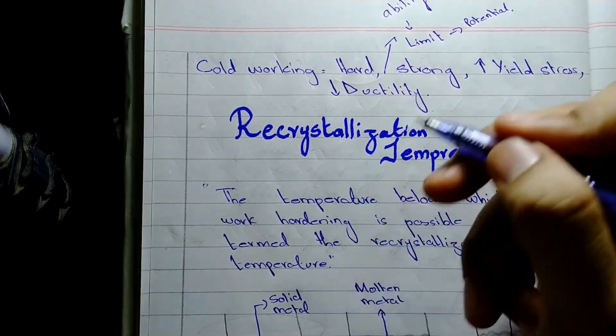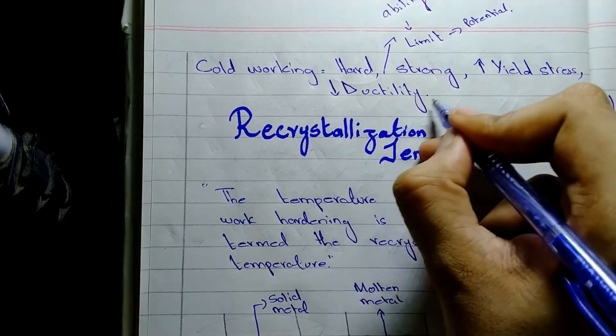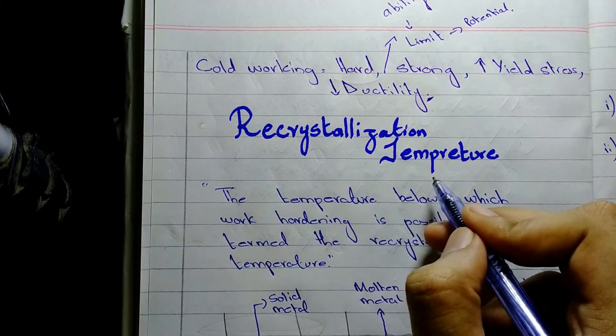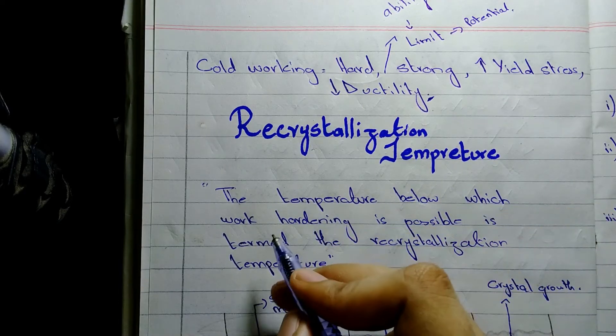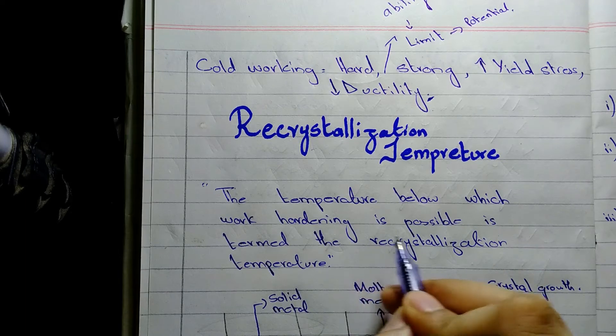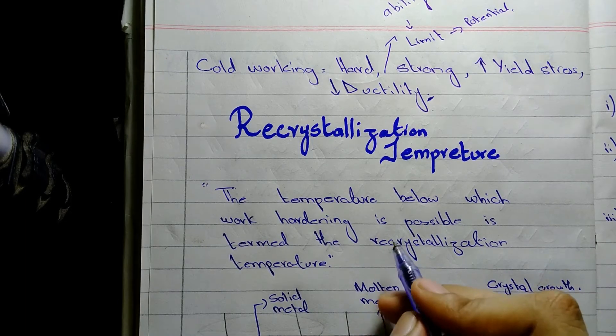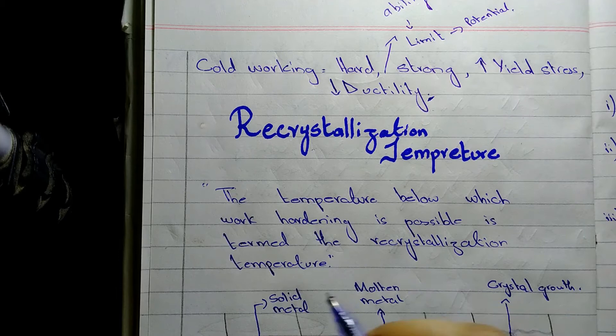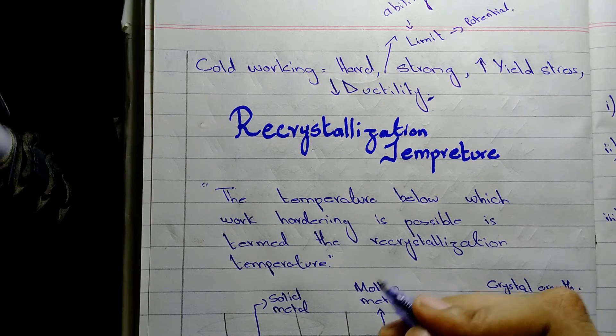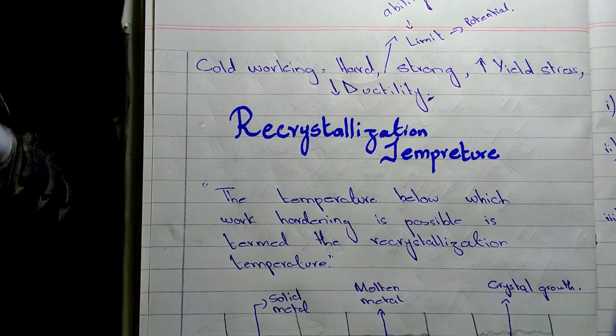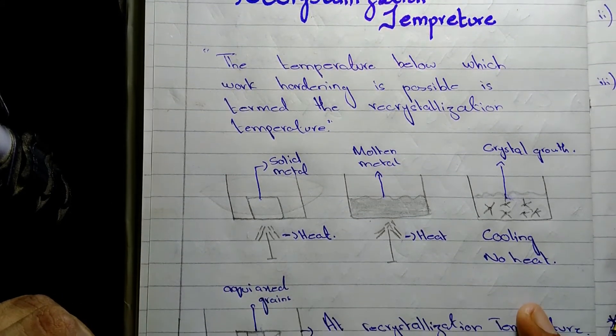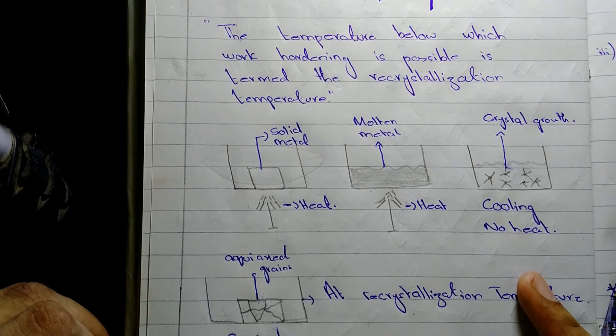That's why the cold work metal has low values of ductility. Now we will talk about recrystallization temperature. Basically, recrystallization temperature is defined as the temperature below which work hardening is possible. This temperature is termed as recrystallization temperature. You don't get it easily by the definition, so here I am going to discuss it with diagrammatic representation.